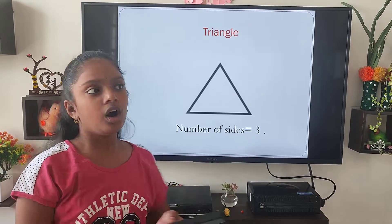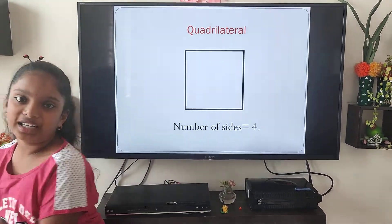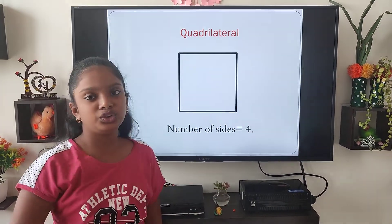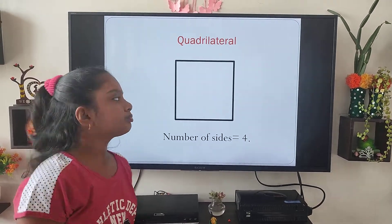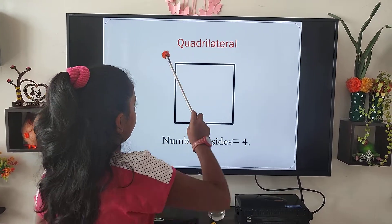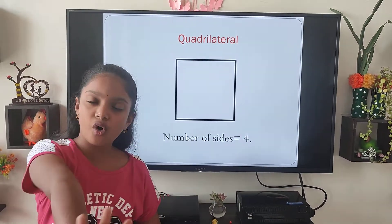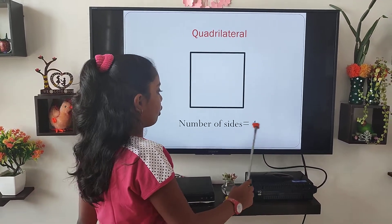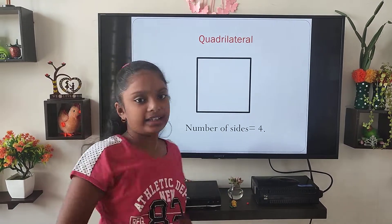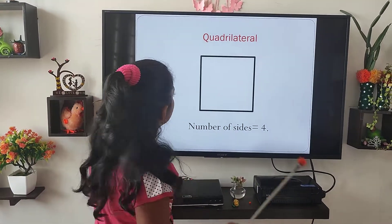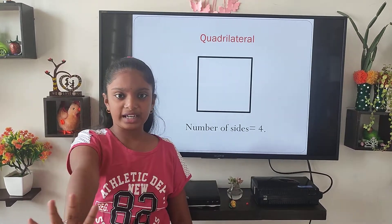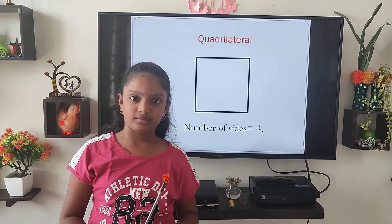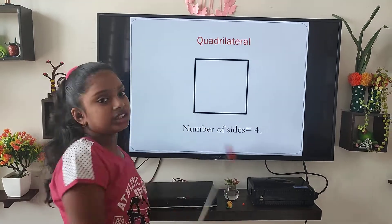Number two is quadrilaterals. A shape which has four sides is known as a quadrilateral. Q-U-A-D has four letters in it, and any shape with four sides is a quadrilateral. Also, nowadays four countries combined and formed a group named QUAD, so quad means four.